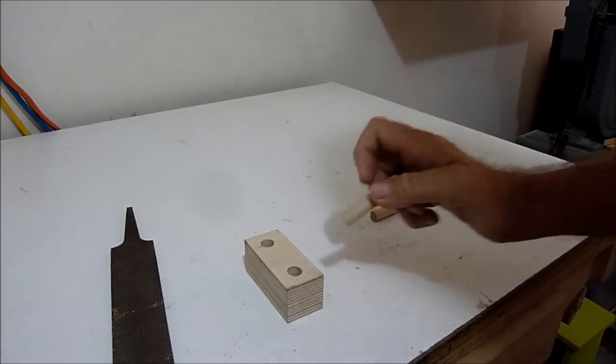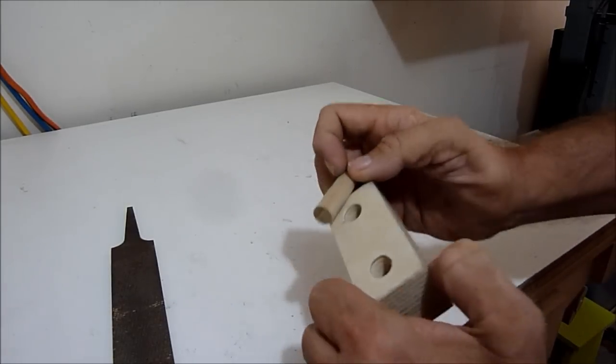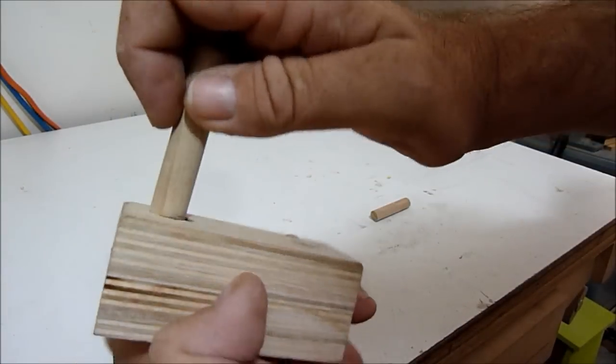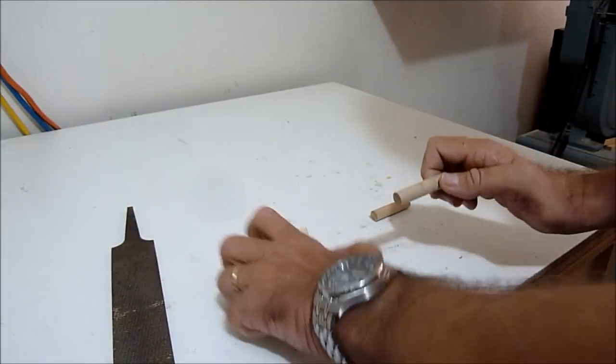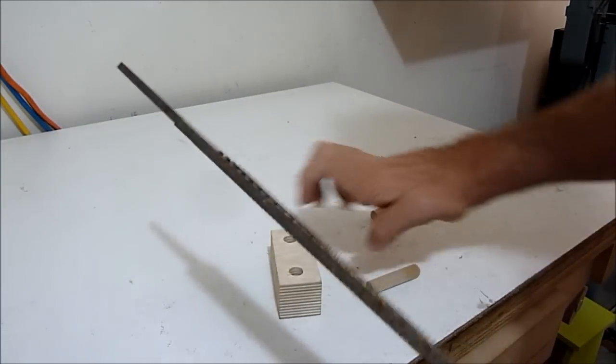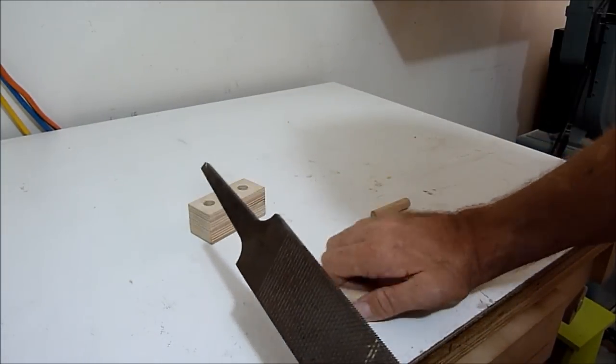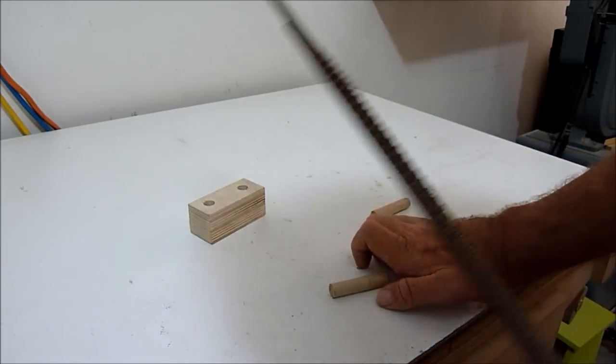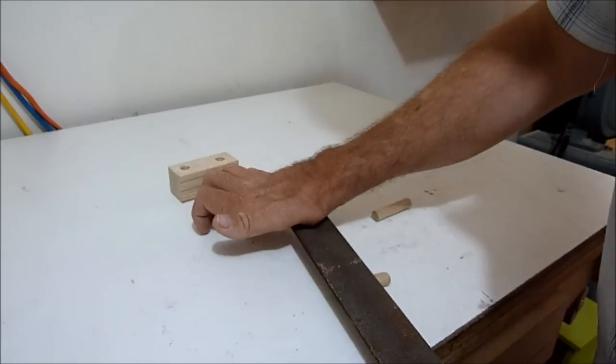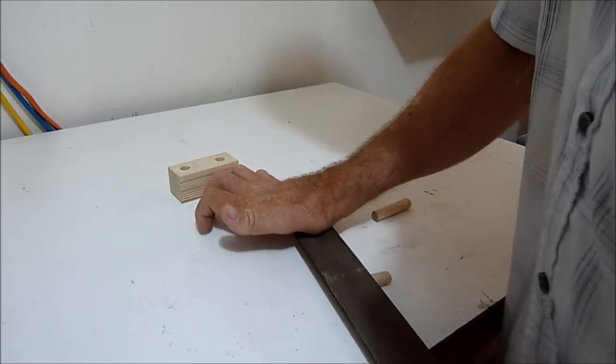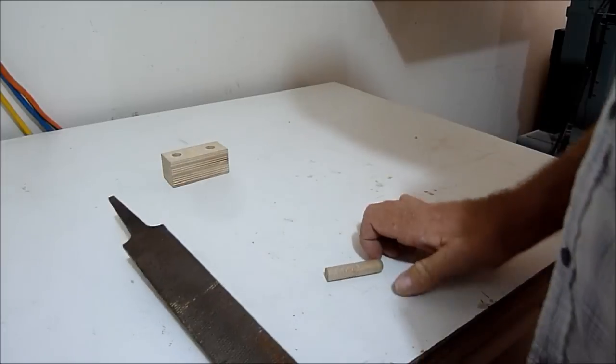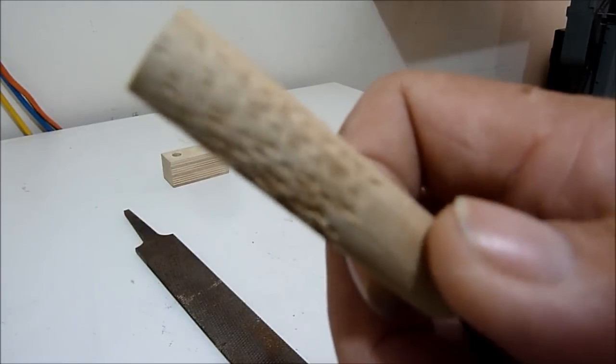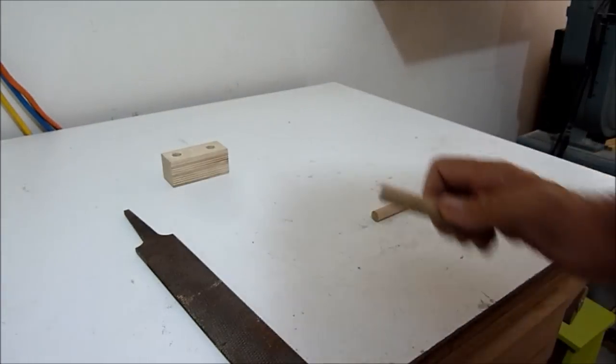Here I'm ready to put in the dowels, but since the holes are the same size as the dowel, I will knurl the dowel so some of the glue can hold on. Just take a file, roll it, and there's something for the glue to hold on to.